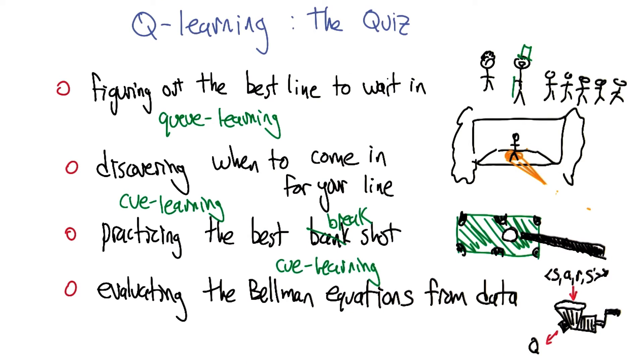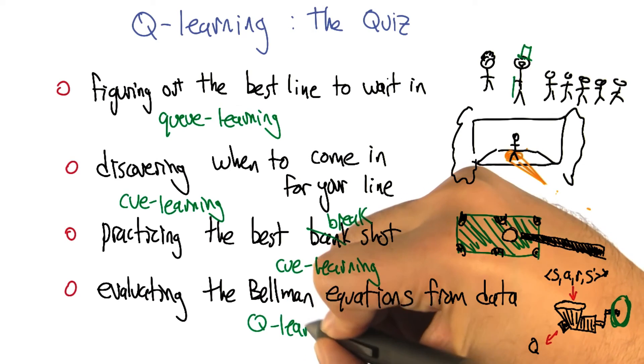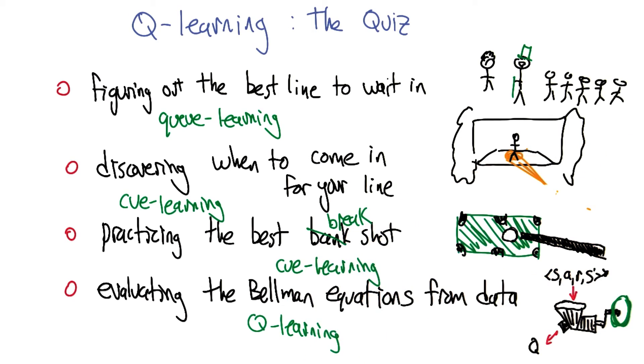Yeah, and I know, I know, I can see where the emphasis is. And the fourth one is evaluating the Bellman equations from data. That is, you take in states, the actions, rewards, and the next states. And you try to learn an actual Q function, which is just the letter Q. So that is Q learning and is the only one that is spelled correctly. And so that is the choice that I would make.